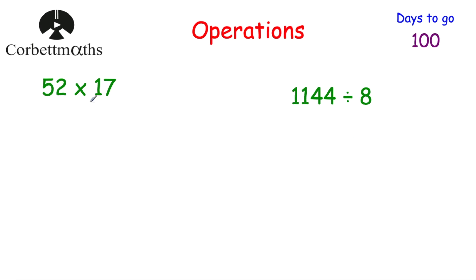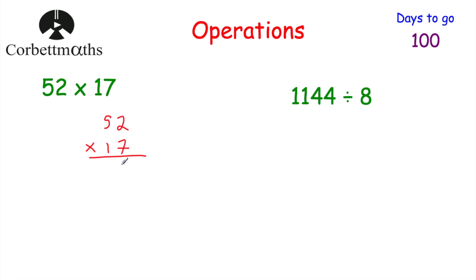Now let's look at multiplication. We've got 52 multiplied by 17. Feel free to pause and try this yourself. We've lined up our numbers and we're going to multiply 52 by 7 first, then do 52 multiplied by 10. So: 7 times 2 is 14, put the 4 down and carry the 1. 7 times 5 is 35, plus 1 is 36. So 52 multiplied by 7 gives us 364. Now for 52 multiplied by 10.